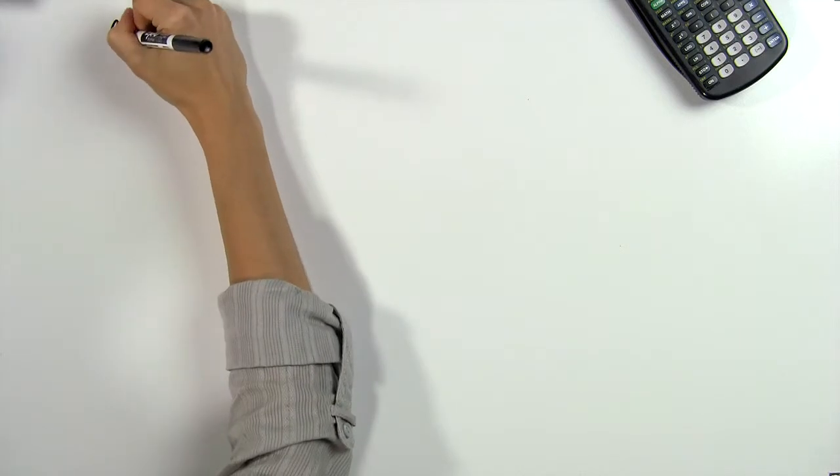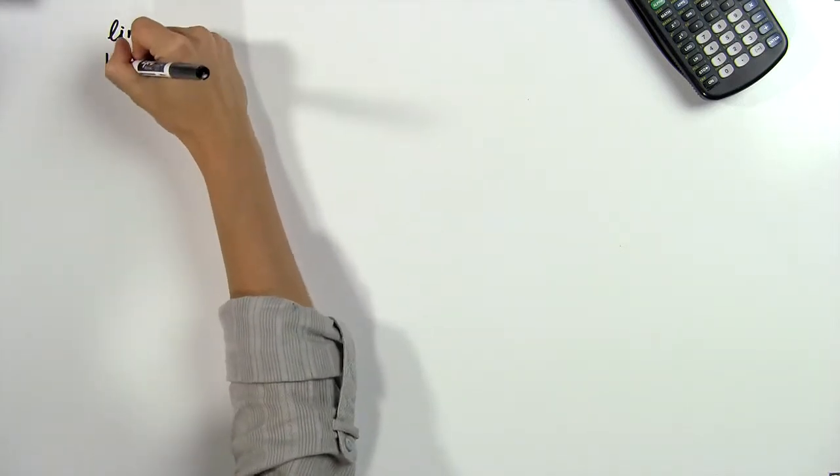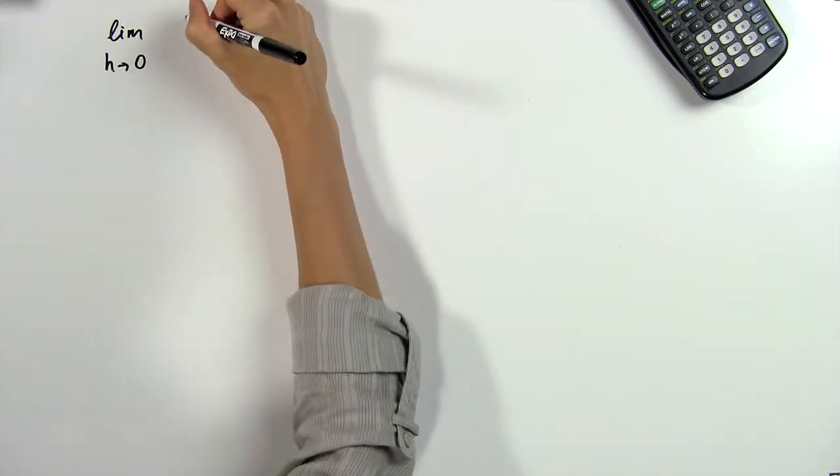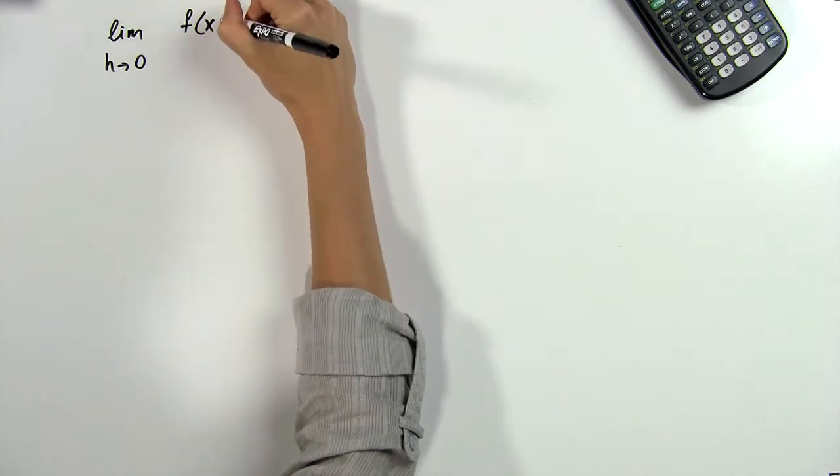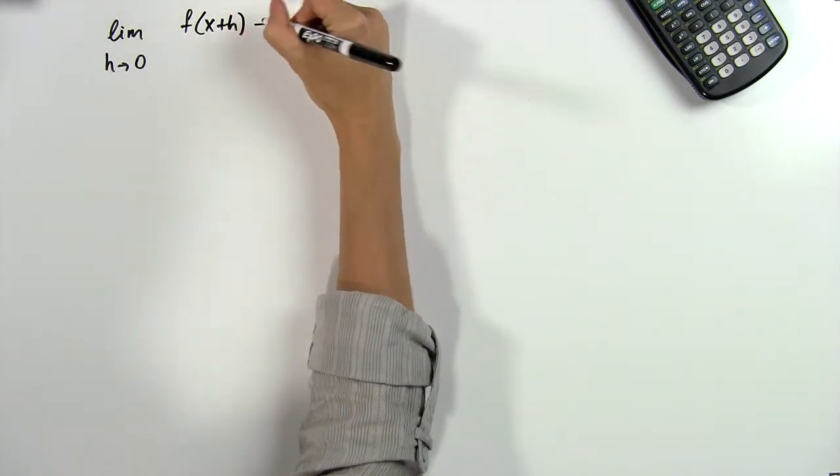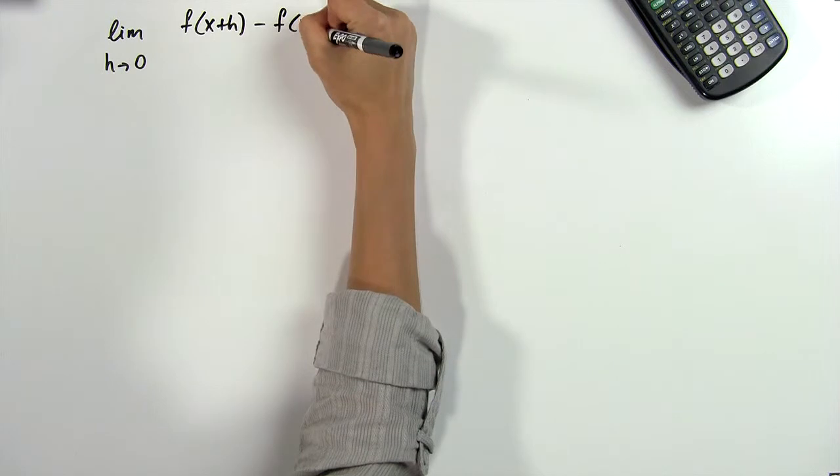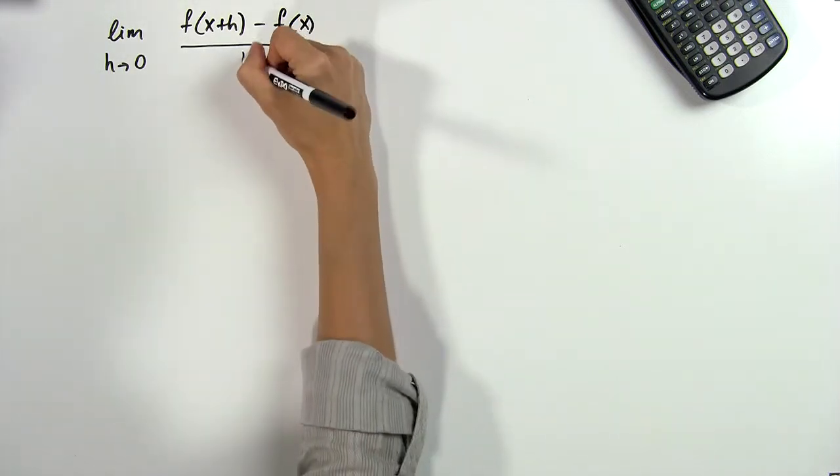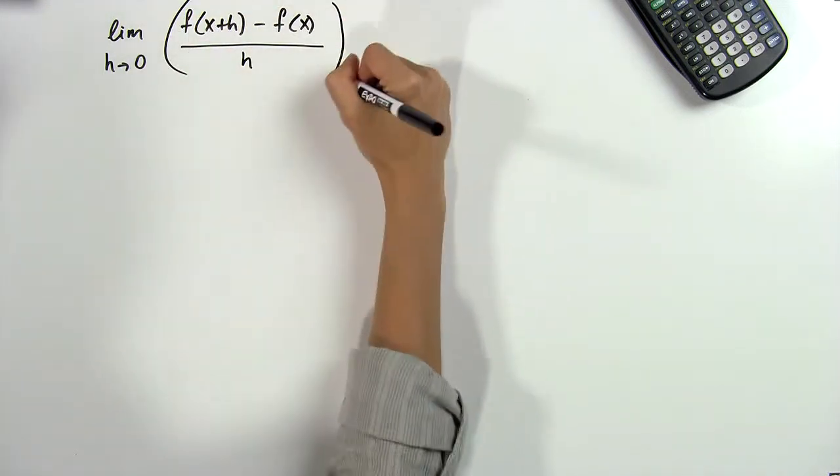The slope of a tangent line at a point x can be found by using the following limit: the limit as h tends to 0 of f(x+h) minus f(x) all divided by h. This is basically the limit definition of a derivative.